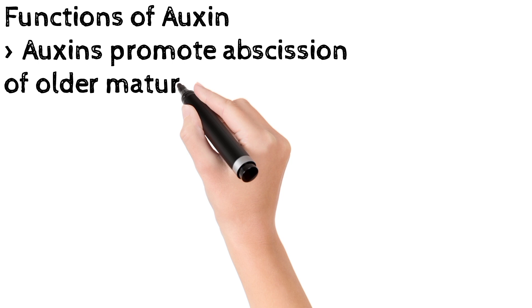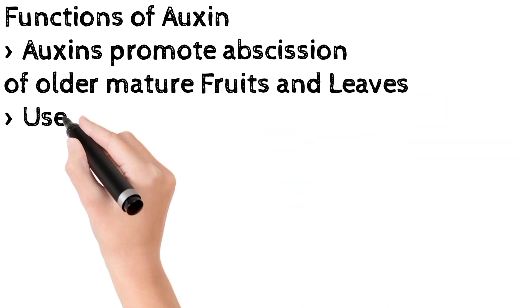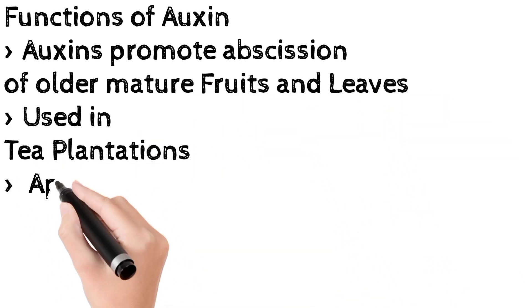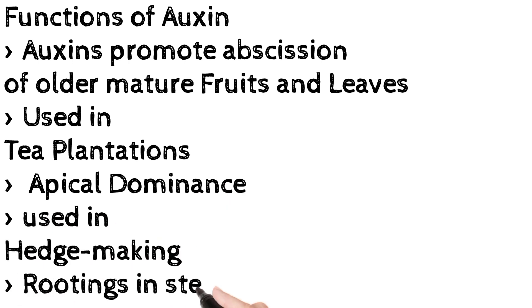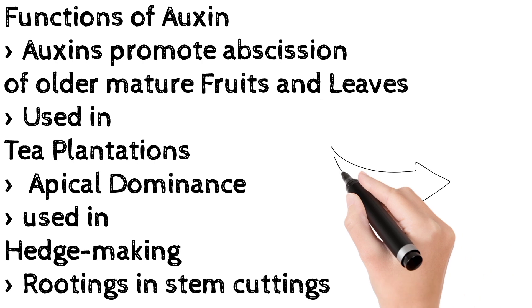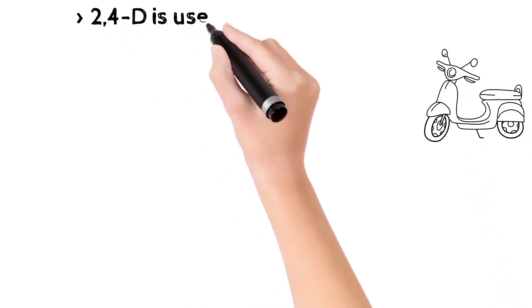Auxin promotes abscission of older mature fruits and leaves. Auxin is used in tea plantations. Auxin is involved in apical dominance used in hedge making. Initiates the rooting in stem cuttings.